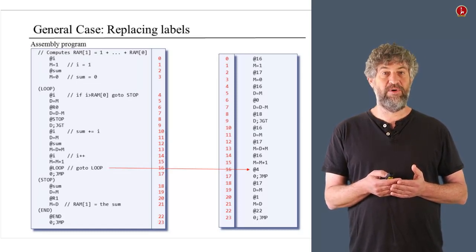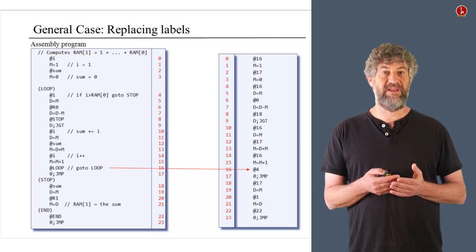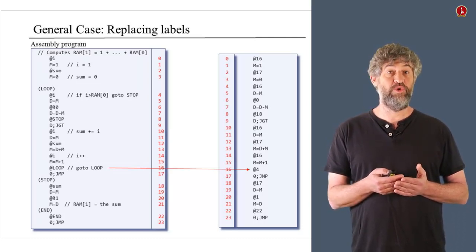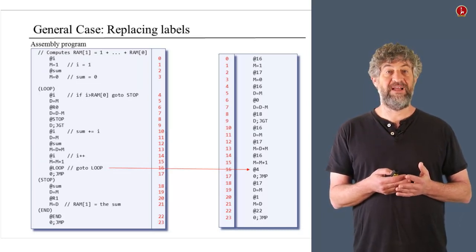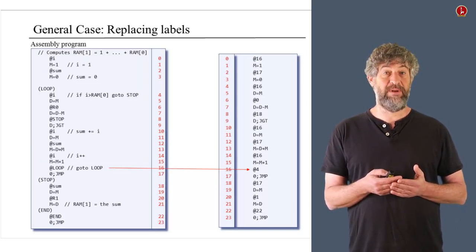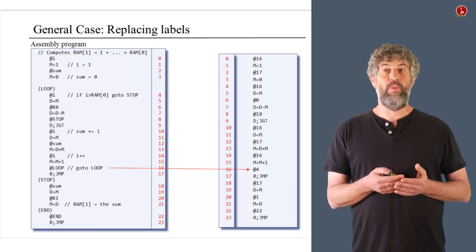And basically, each command takes one position. Of course, declarations of labels, like the loop declaration, is not really a command. It's just something in assemblies that the assemblers should take into account. And that you, now translating it, should take into account. But of course, it is not really a command, so we don't allocate any place to it.